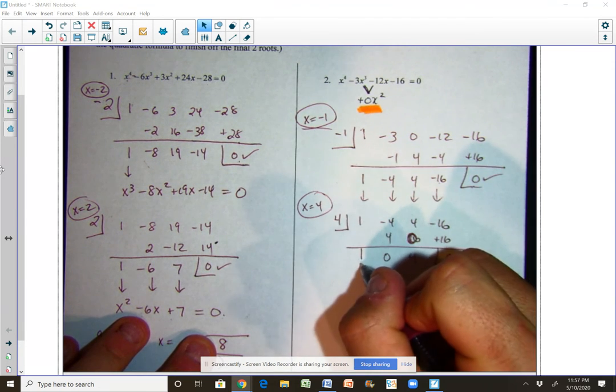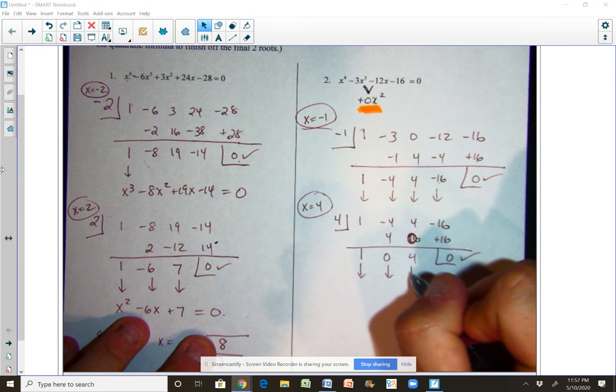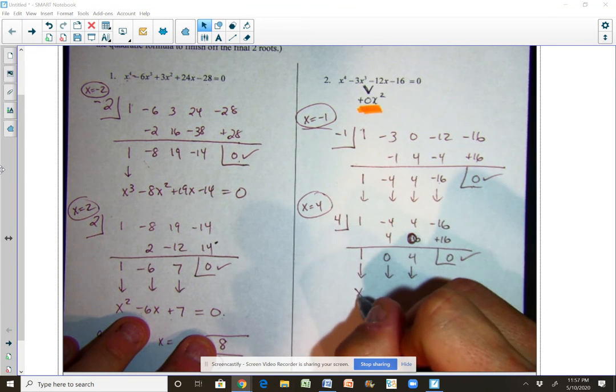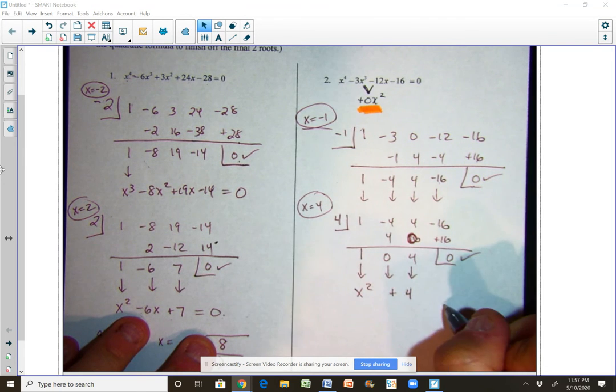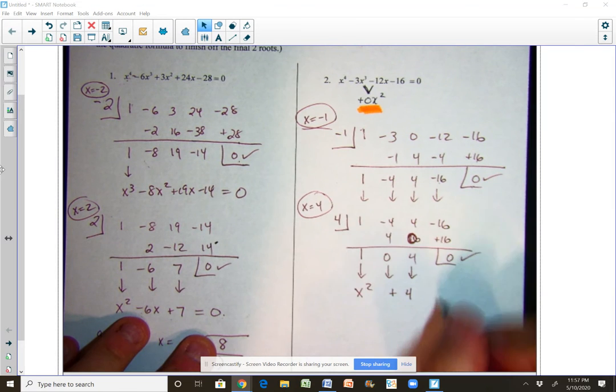Now we're down to a second degree polynomial. This is our 1x squared term plus 0x and then plus 4. So that is what we're left with trying to solve. We want to set that equal to zero and solve that out.